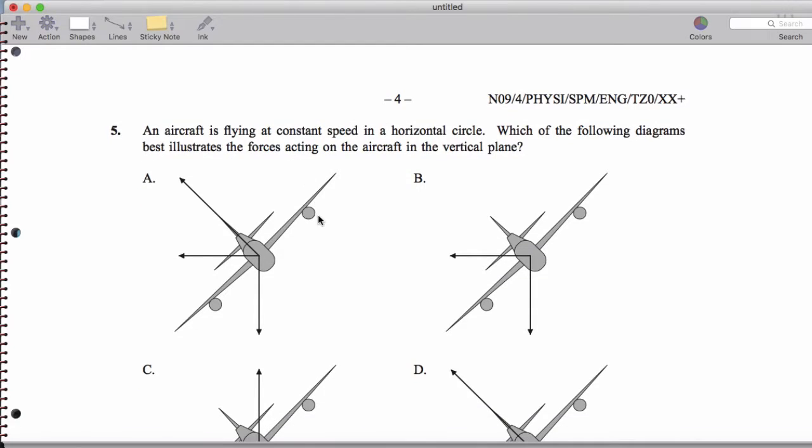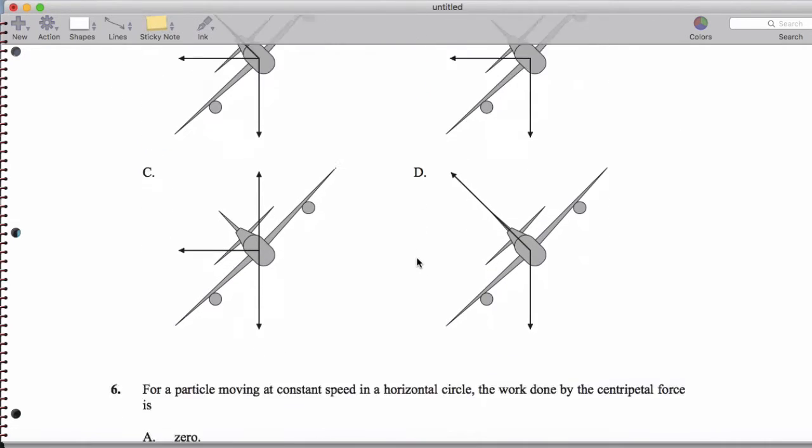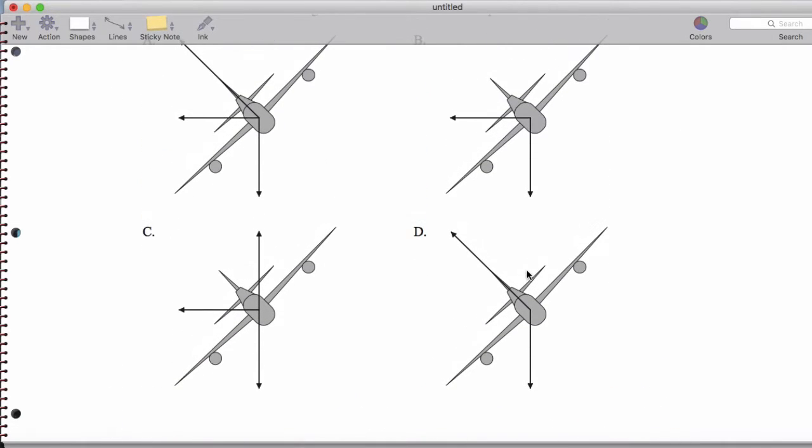And then for number five, the forces acting on the aircraft vertically. Basically, we're going to have a wind force going this way and a weight force going down.